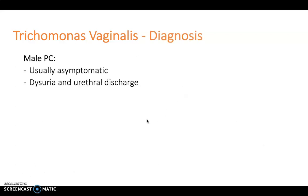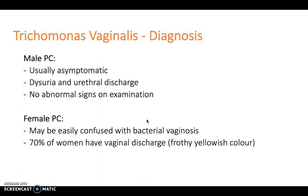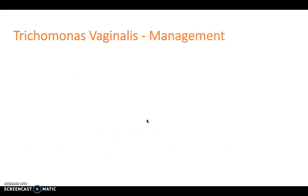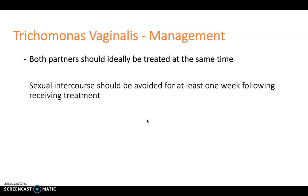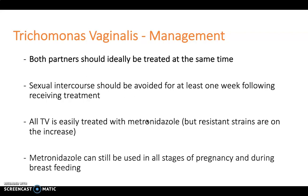Males may be asymptomatic or have dysuria or urethral discharge, with often no abnormal signs on examination. In females, trichomonas may be confused with bacterial vaginosis — 70% of women will have frothy yellowish vaginal discharge, and they may also have vulval itching, dysuria, and offensive odour. Management requires treating both partners as it is sexually transmitted, and sexual intercourse should be avoided for at least one week following treatment. Trichomonas is easily treated with metronidazole, though resistant strains are increasing; metronidazole can be used in all stages of pregnancy and during breastfeeding.